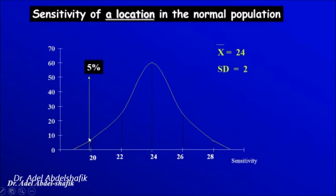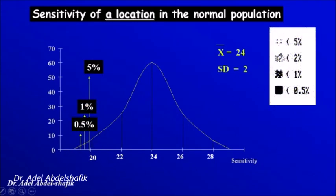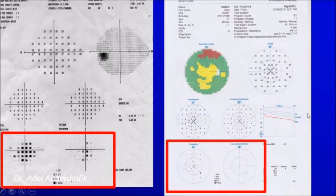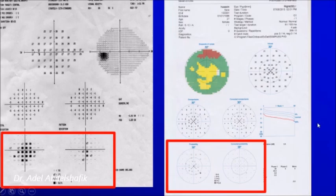Whatever value we have, we can say it occurs in 5%, 2%, 1%, or 0.5% of the normal group. These points are shown as abnormally low, with the probability of being normal at 5%, 2%, or 1%.